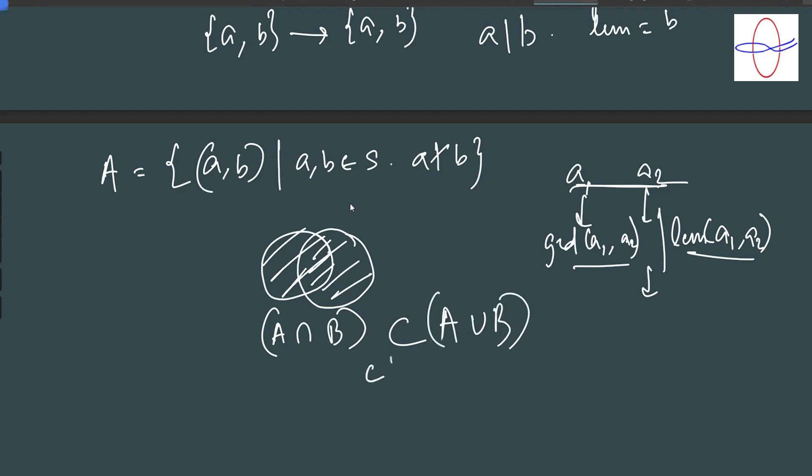So A intersection B is always a subset of A union B and what did we learn about subsets is that if C is a subset of D then, if C was a subset of D and C and D being the multi-sets of small c and small d respectively, then C must divide D. So this means the GCD must always divide LCM.